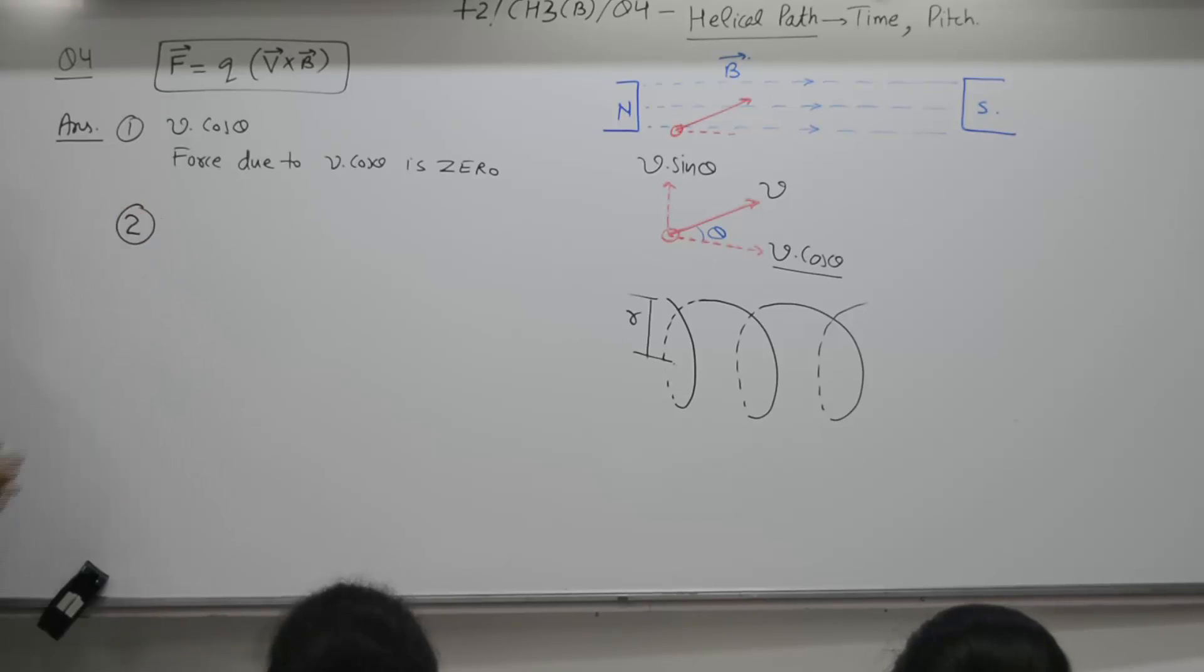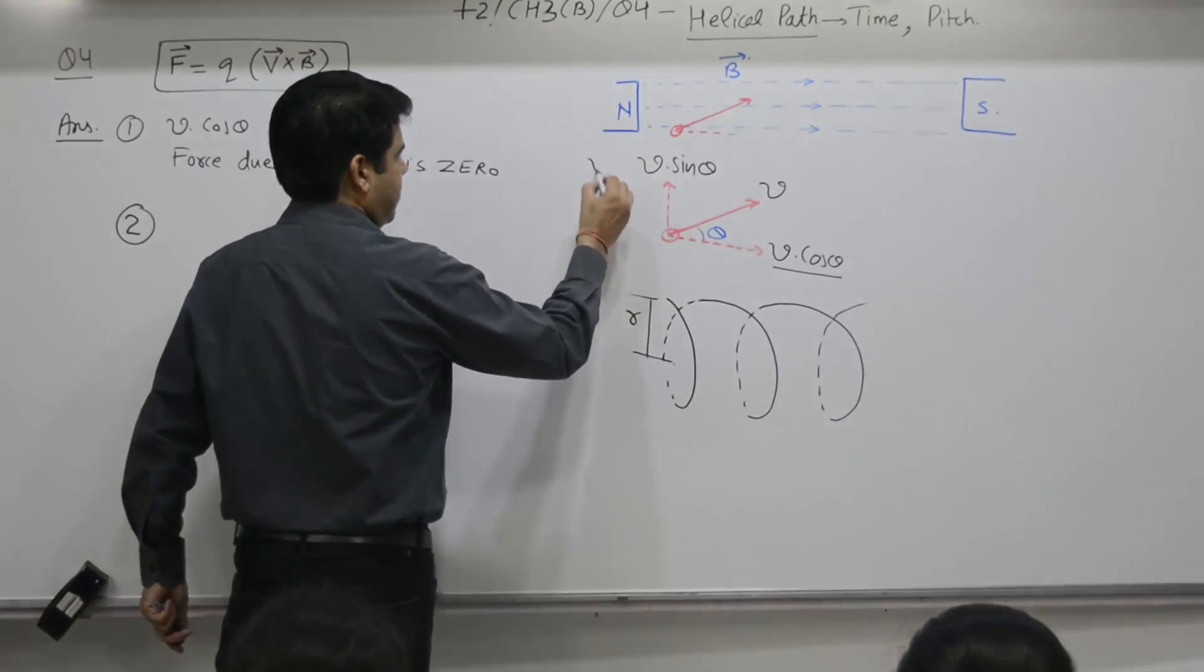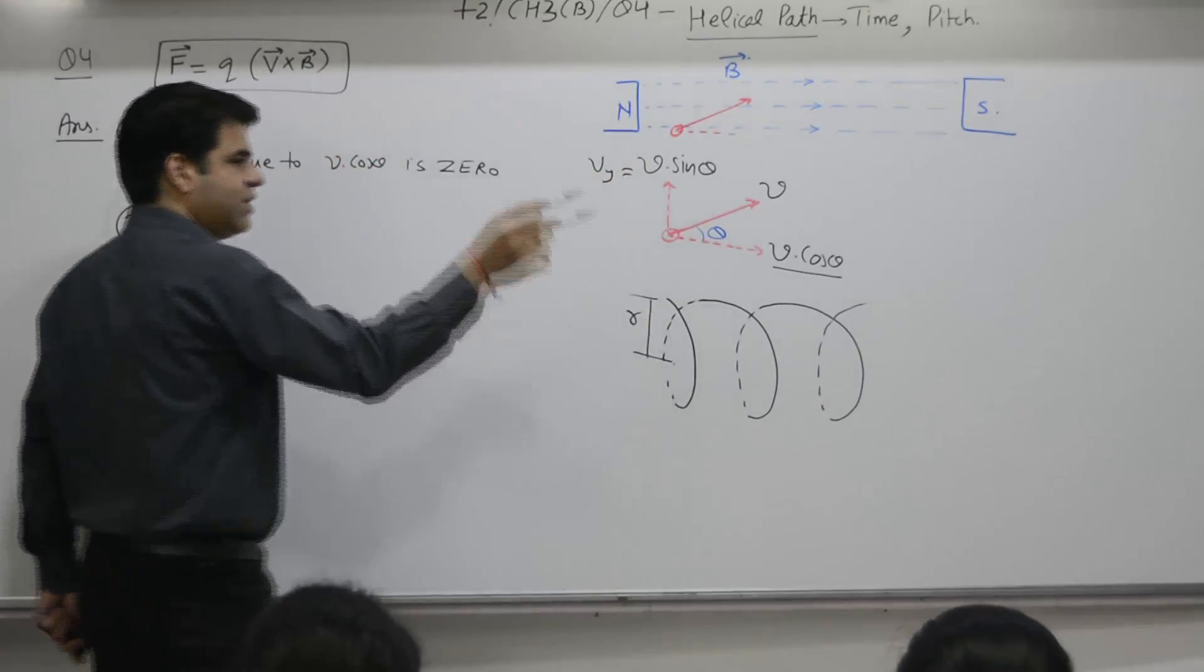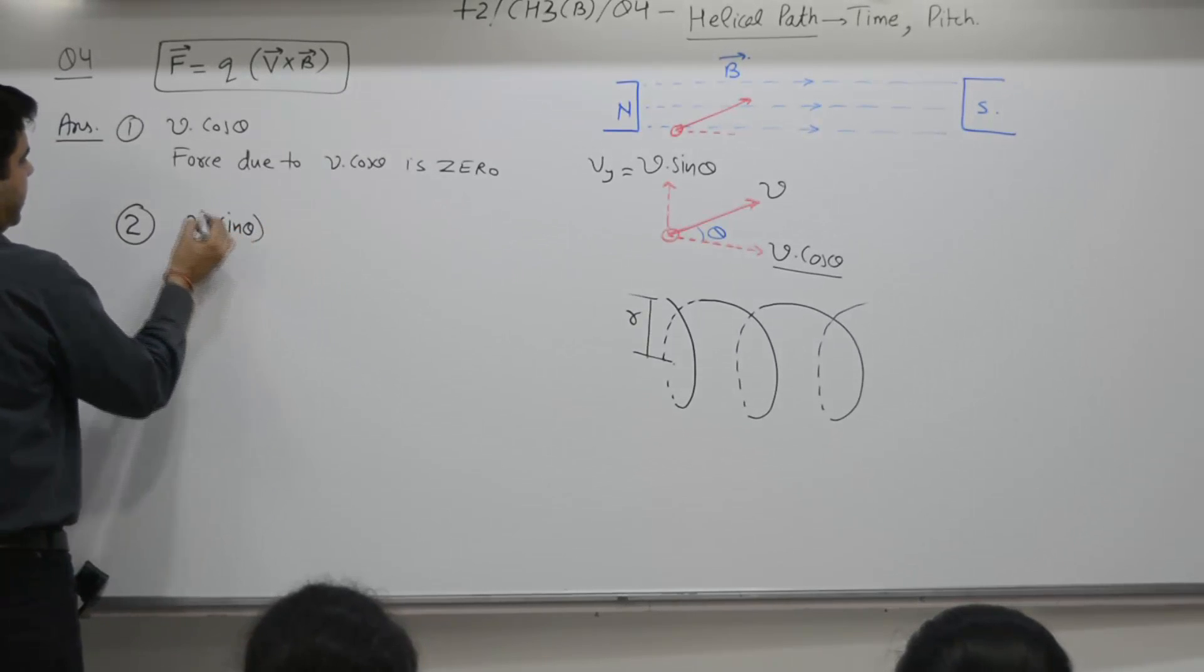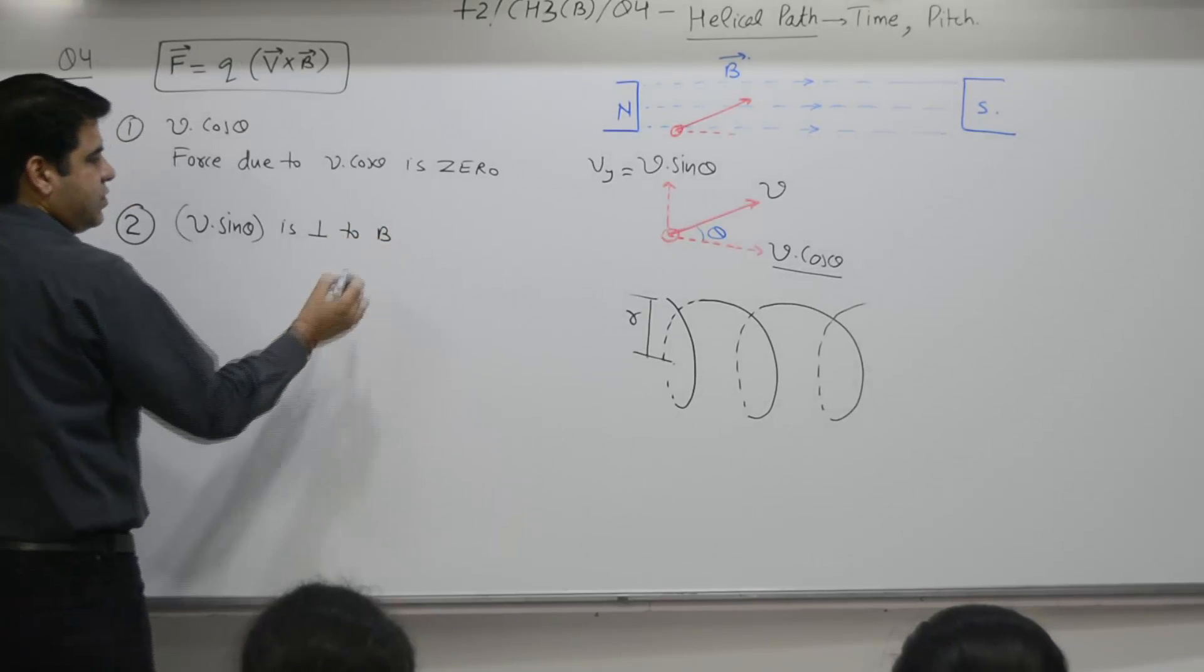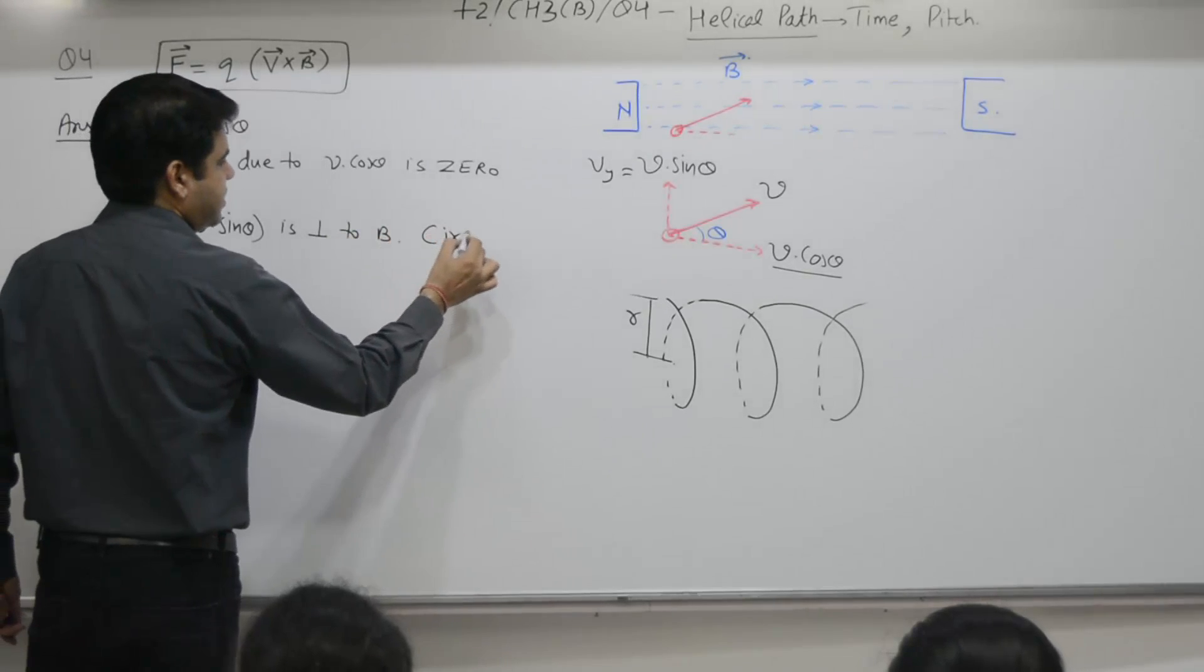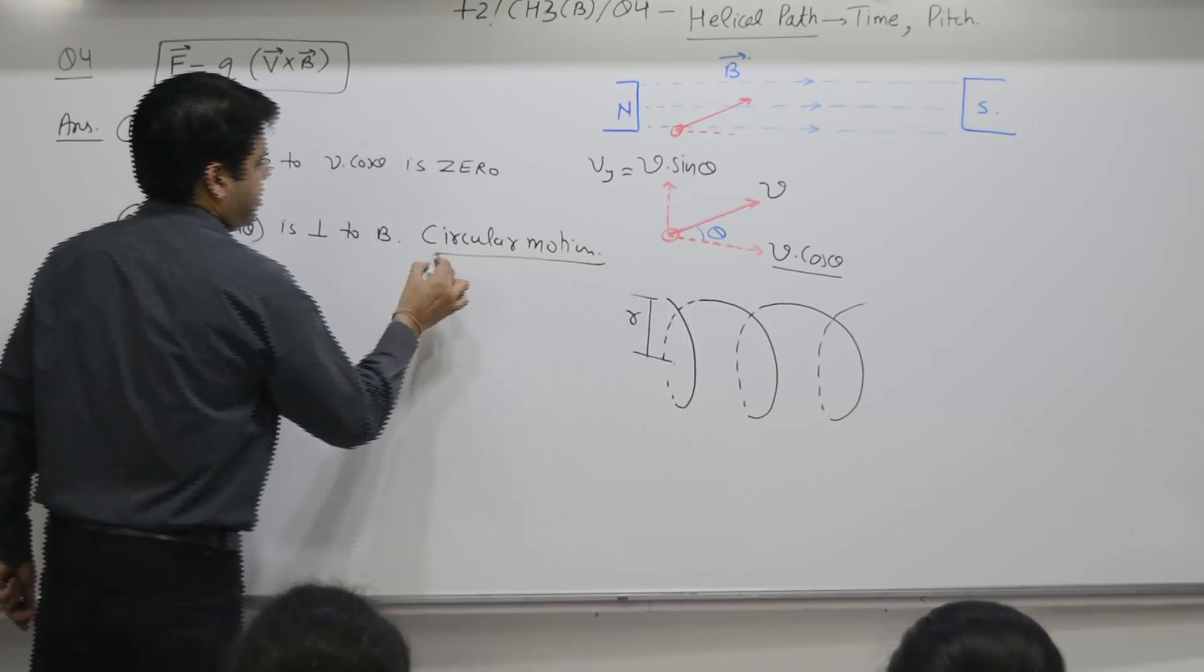2. Because of v y, v sin theta, this v y component, v sin theta will do what? V sin theta is perpendicular to B. So, because of this, circular motion.